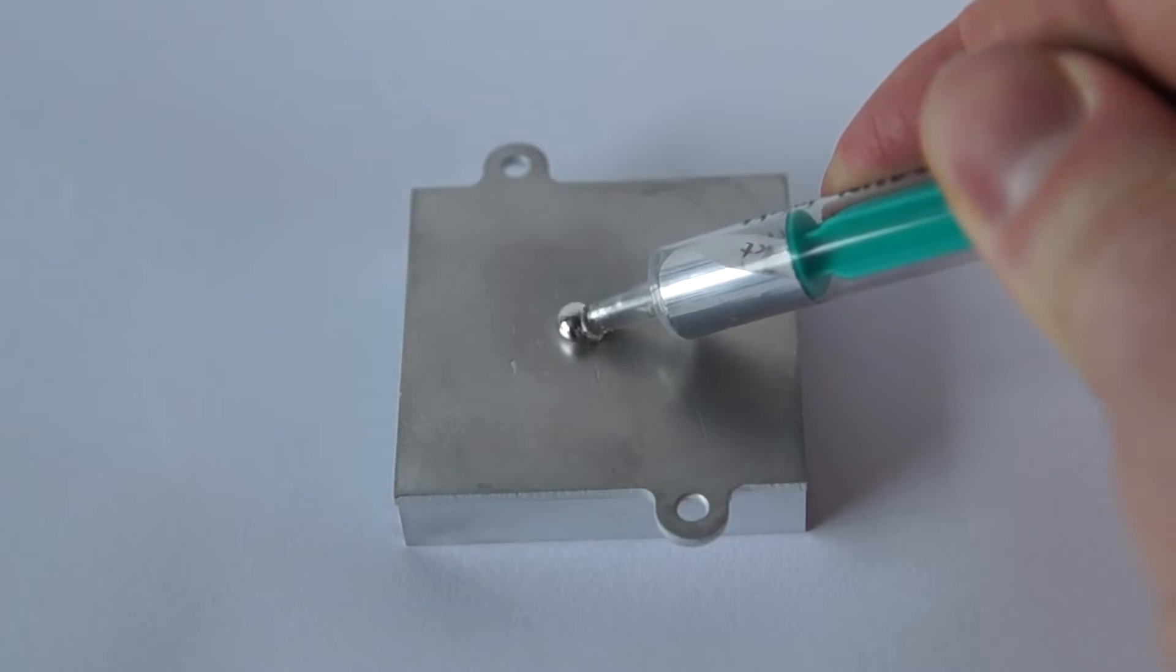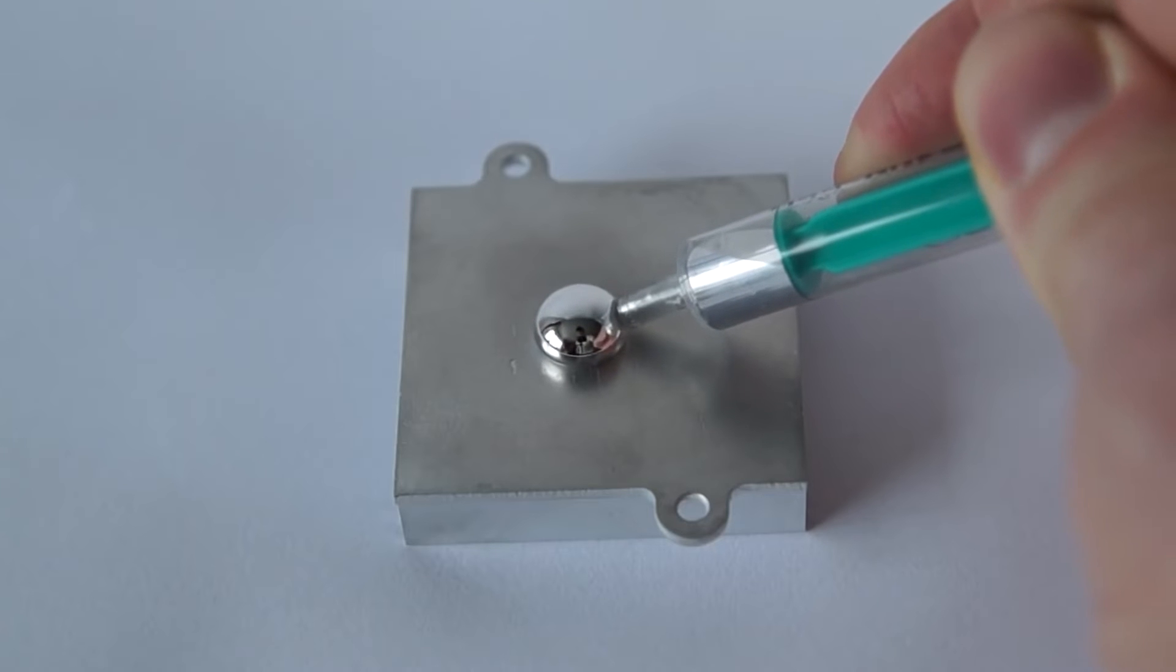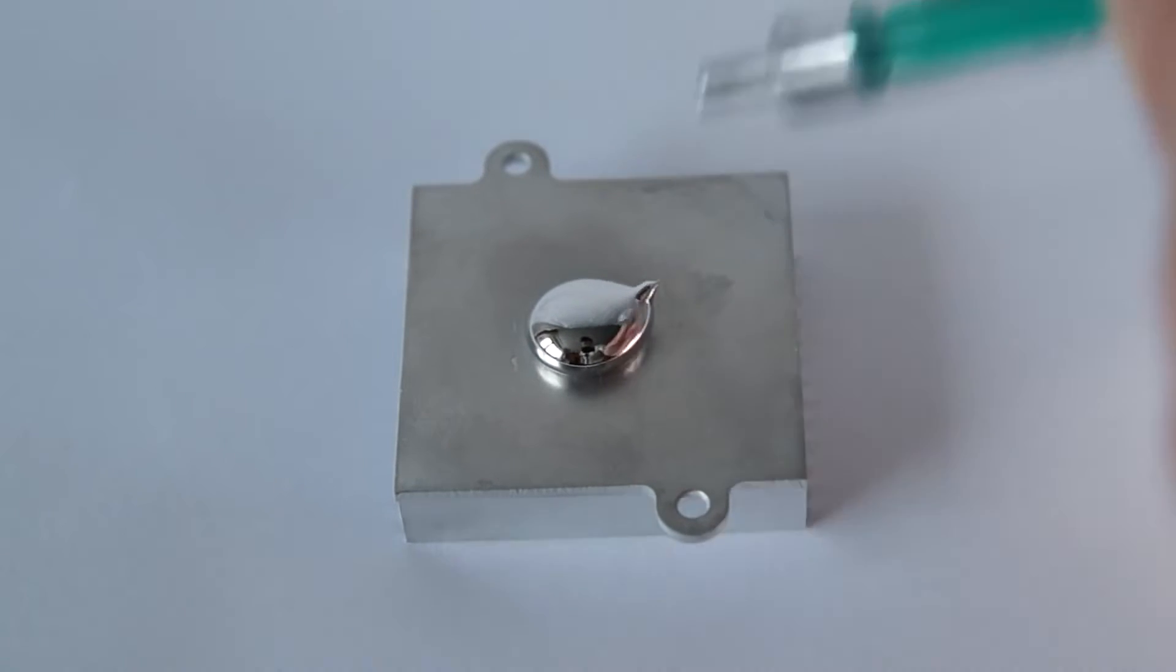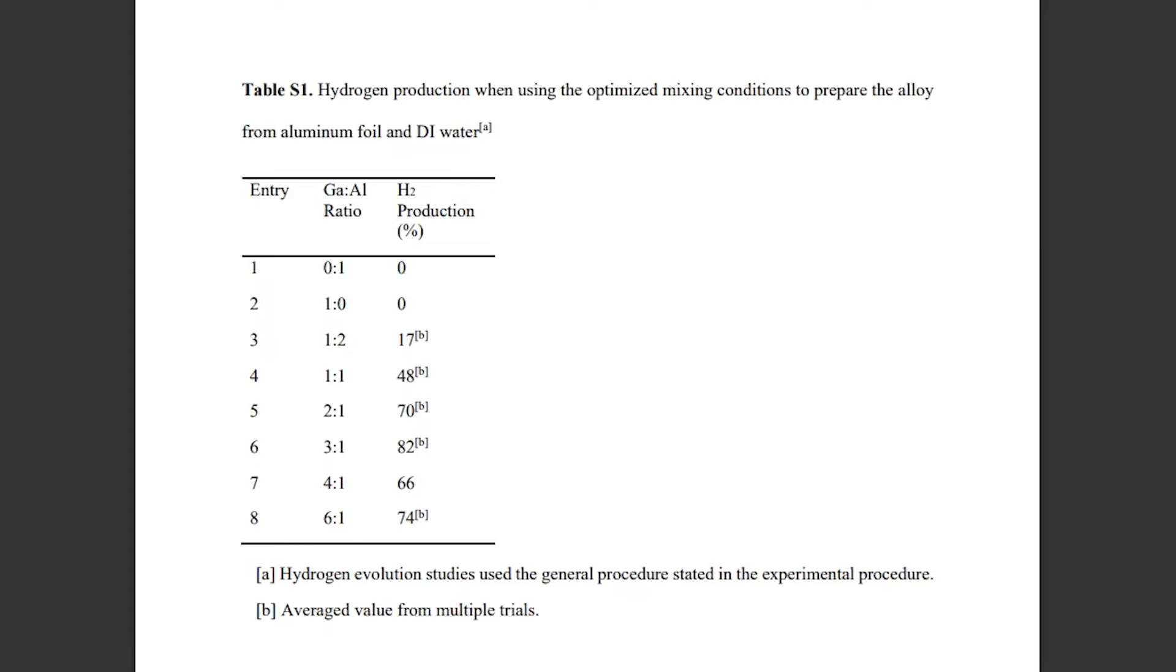With the help of scanning electron microscopy and x-ray diffraction techniques, the researchers were able to find the best mix of aluminum and gallium for producing hydrogen with the greatest efficiency. Their findings were that a 3 to 1 gallium to aluminum ratio was best.